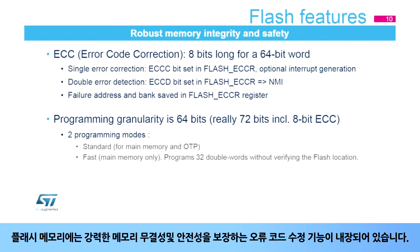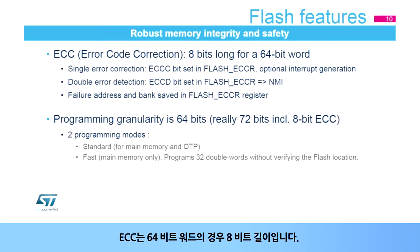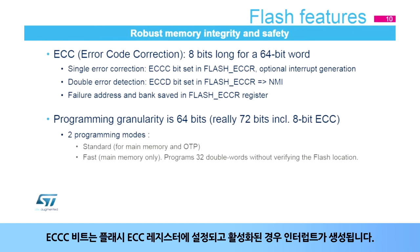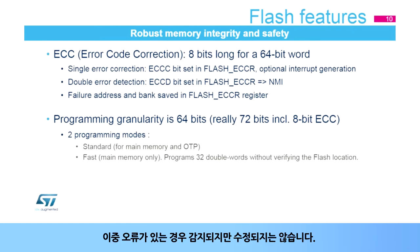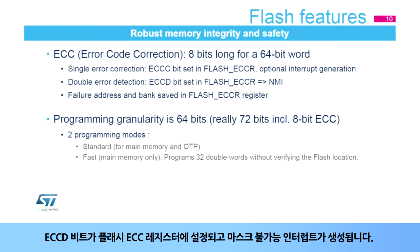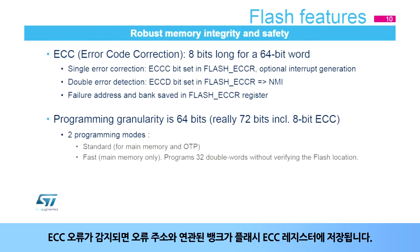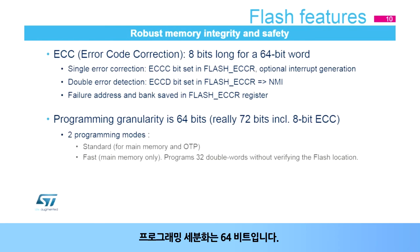The flash memory embeds an error code correction function to ensure robust memory integrity and safety. The ECC is 8 bits long for a 64-bit word. In the case of a single error, it is corrected — the ECCC bit is set in the flash ECC register, and an interrupt is generated if enabled. In the case of a double error, it is detected but not corrected — the ECCD bit is set in the flash ECC register, and a non-maskable interrupt is generated. When an ECC error is detected, the failure address and associated bank are saved in the flash ECC register.